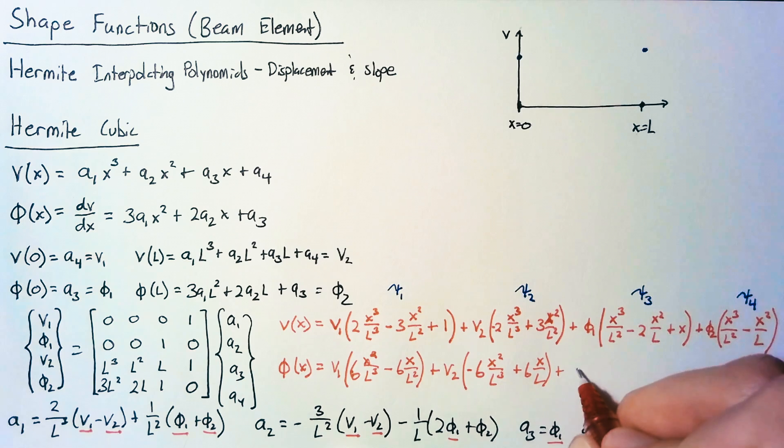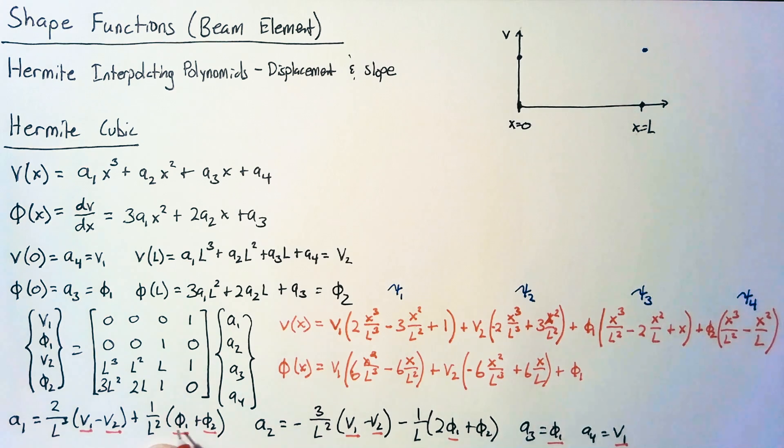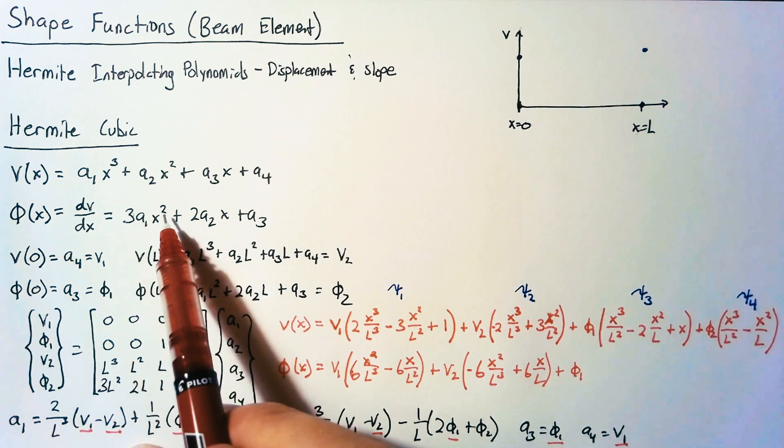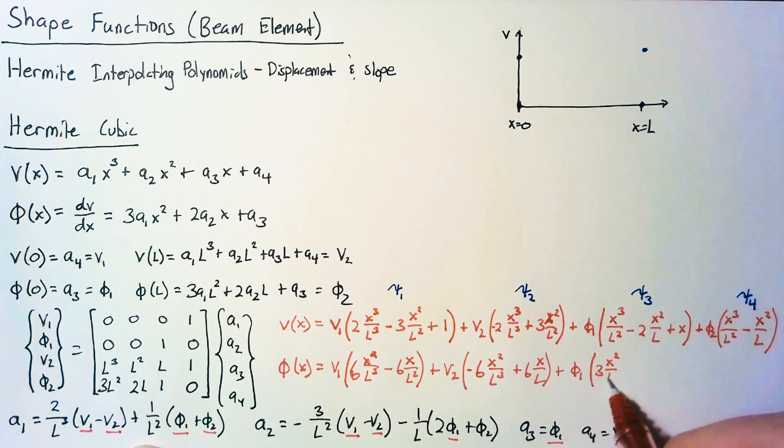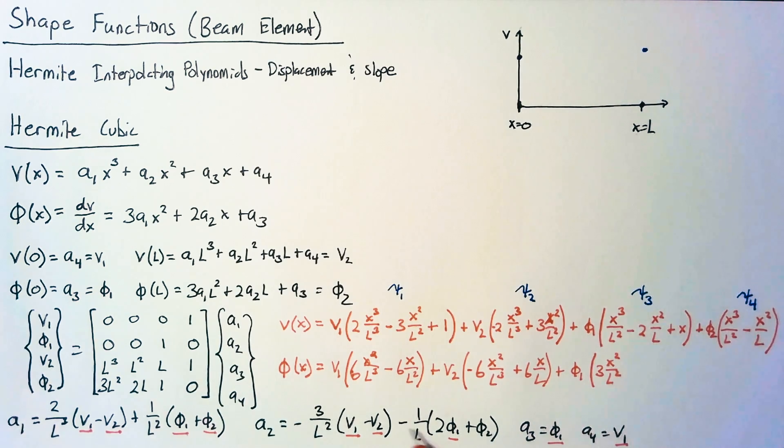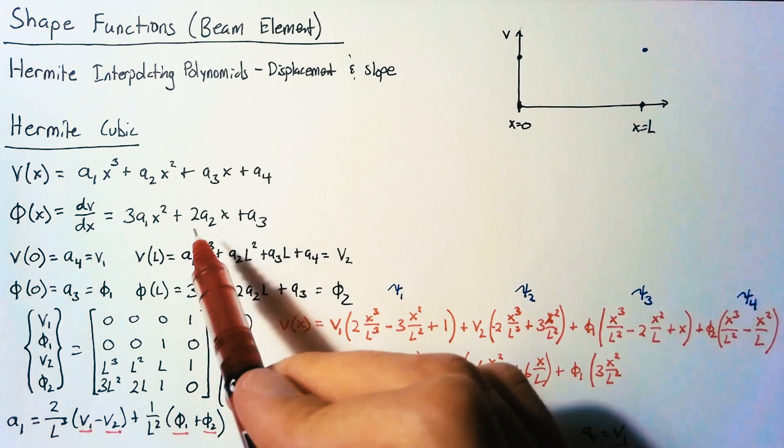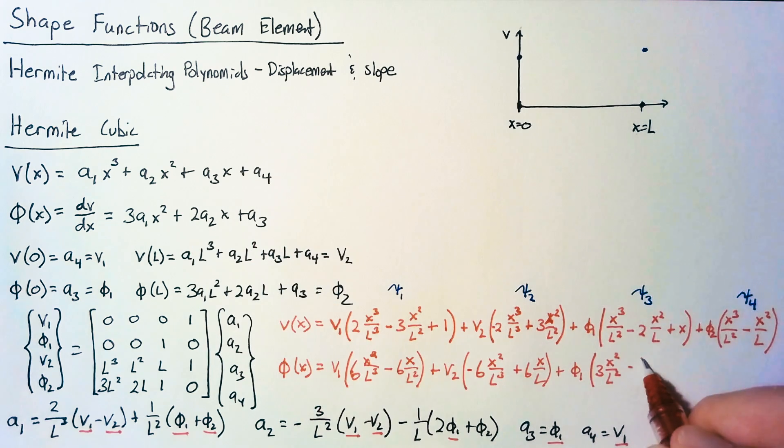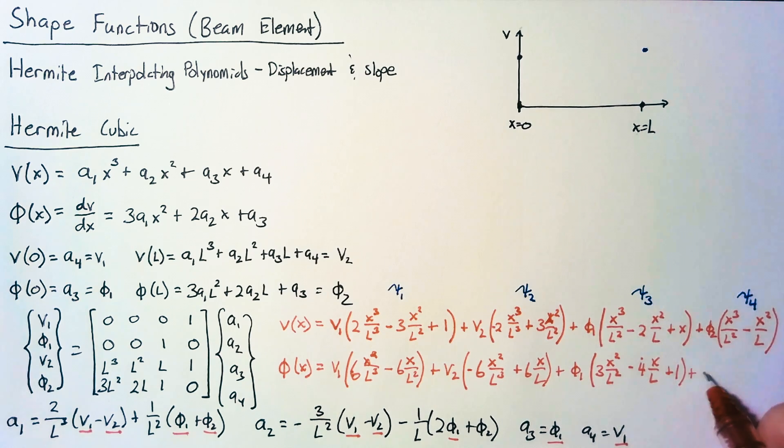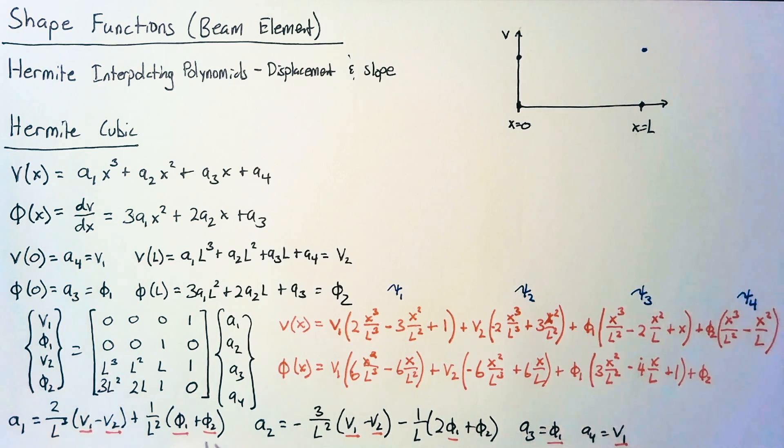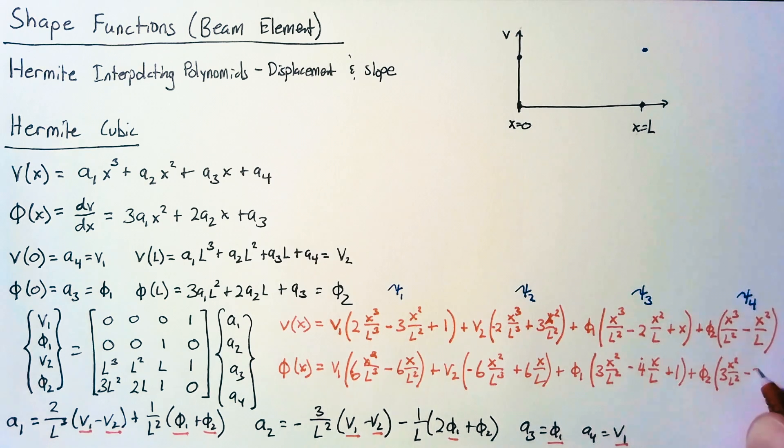For phi1, we have 3 times x squared over l squared minus 2 times 2, so 4x over l. Then finally, plus 1. Then phi2, we have again 3 times x squared over l squared. And this time we just have a minus 2 times x over l.